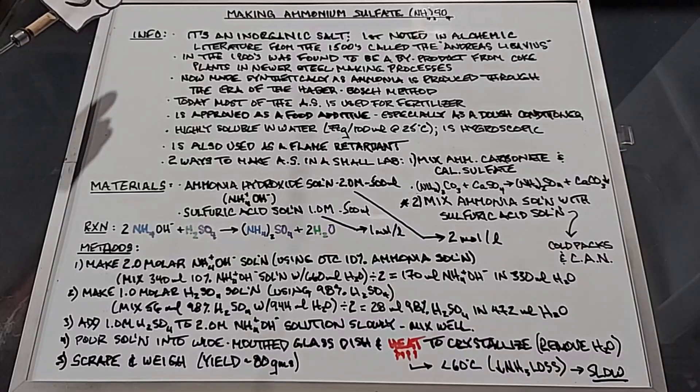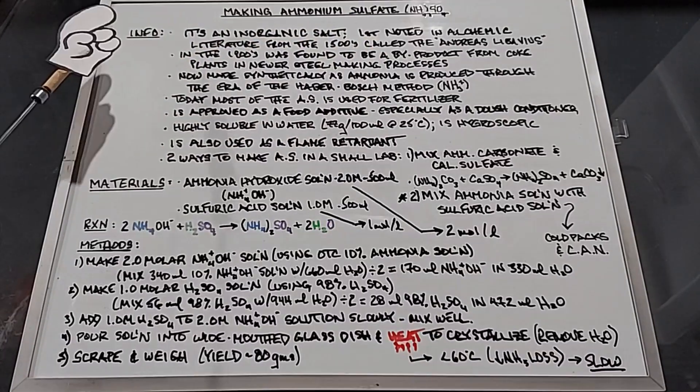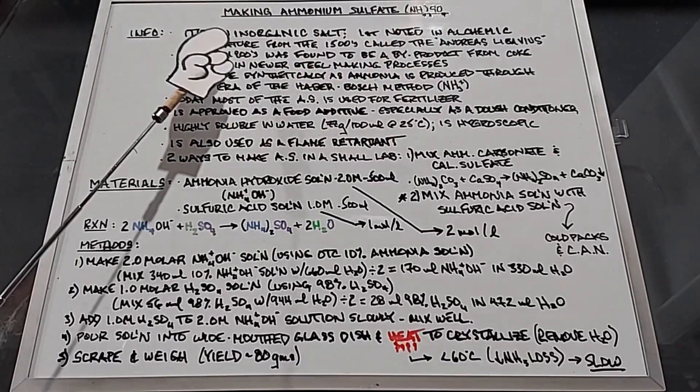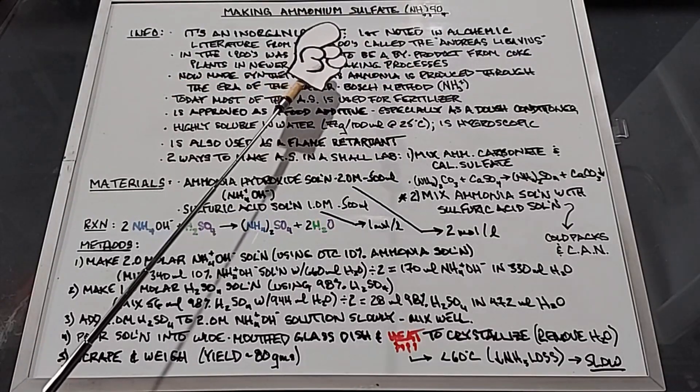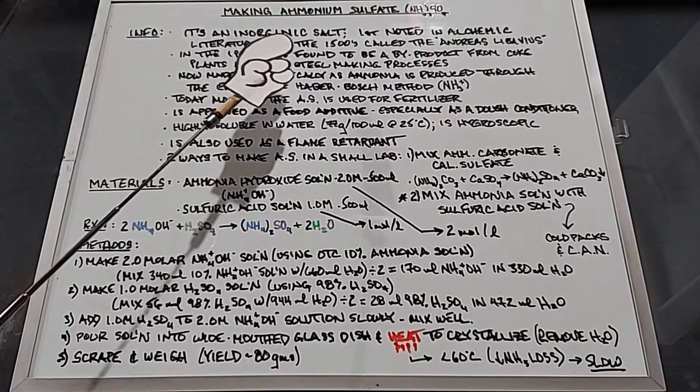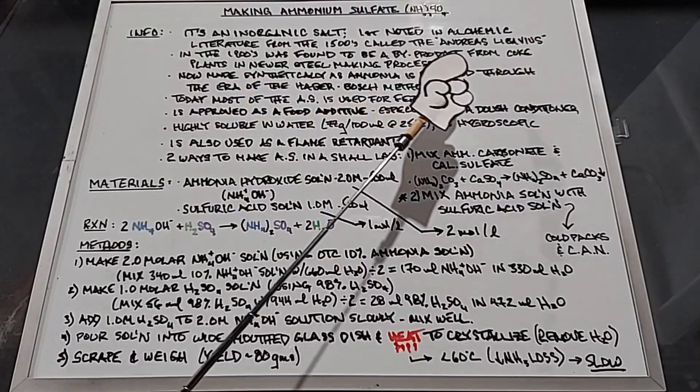In this video we're going to talk about making some ammonium sulfate NH4₂SO₄. Some info: it's an inorganic salt first noted in the alchemic literature from the 1500s to the 14th century by Andreas Libavius. In the 1900s it was found to be a byproduct from coke plants in the newer steel making processes.